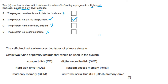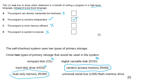The self-checkout system uses two types of primary storage — circle two. CD — secondary storage, not used. DVD — optical storage, not used. Hard disk (HDD) — not used. RAM — primary storage, circle this. ROM — primary storage, circle this. USB — also incorrect.